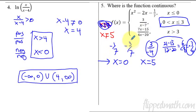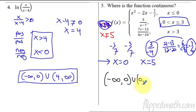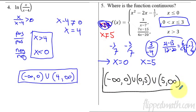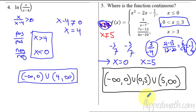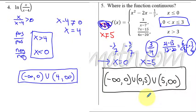So when is this function continuous? It is continuous from negative infinity up to zero, union zero to five, union five to infinity. This is the whole point of the lesson — figuring out the domain and then determining on what intervals the function is continuous. Rock that mastery check, and I'll see you back in the next lesson.